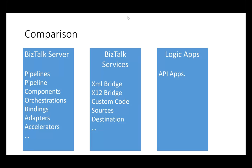The neat part about Logic Apps is all this metadata — whether in terms of how you construct your business flow or what the metadata is — it's in JSON format. It's very readable. If you open the designer and go to the code view, what you see is essentially a JSON metadata which describes what your business process is.